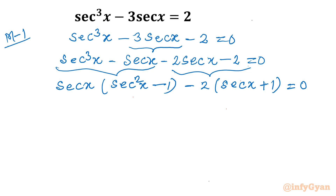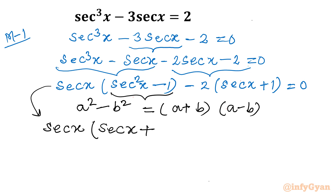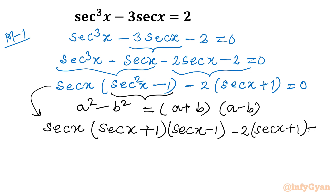Now I will use the identity a² − b² = (a + b)(a − b), the difference of two squares. Applying this to sec²x − 1, the equation becomes sec x · (sec x + 1)(sec x − 1) − 2(sec x + 1) = 0.